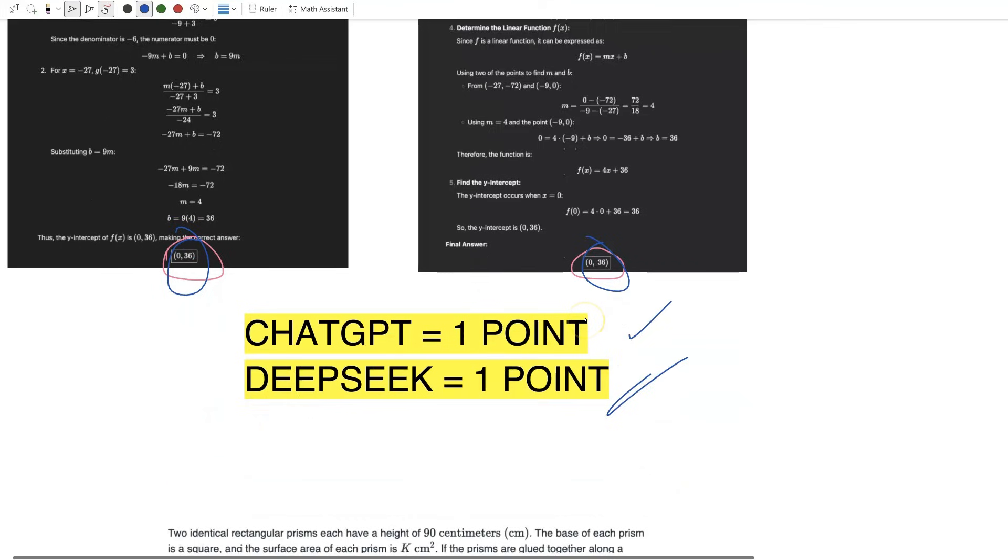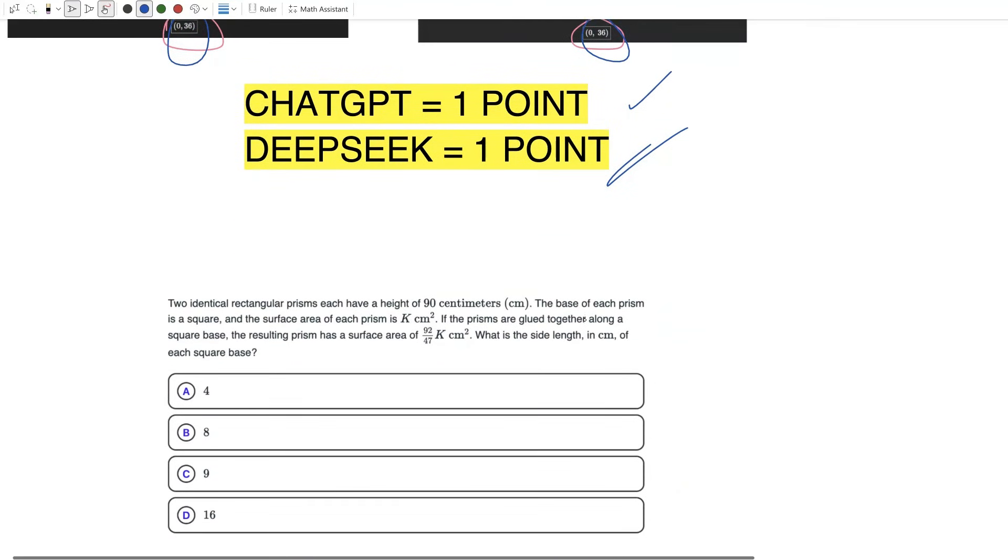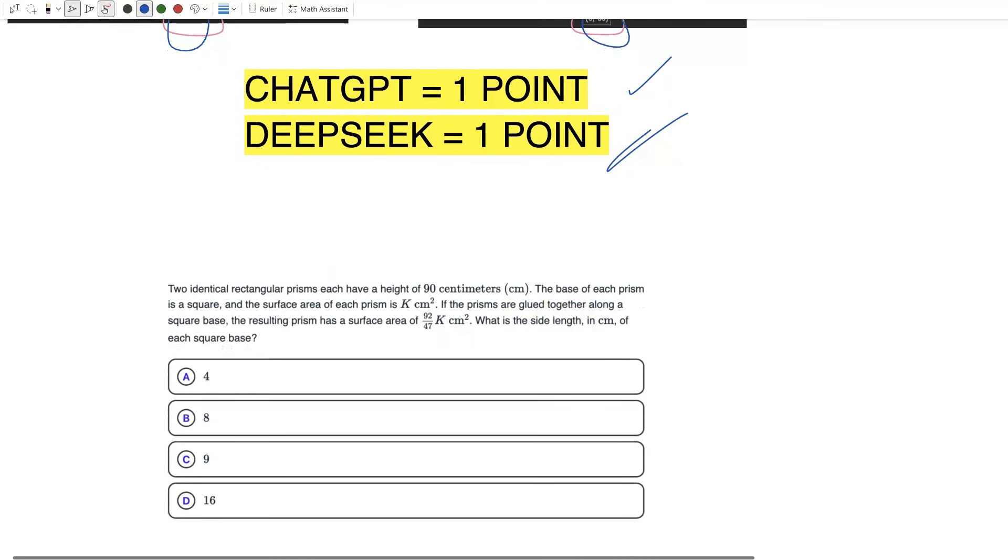Let's move on to our second question. This is a very infamous one, it's on the Blue Book practice test. This is a hard geometry problem. Two identical rectangular prisms each have a height of 90 centimeters.